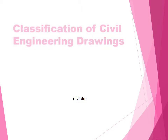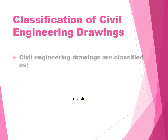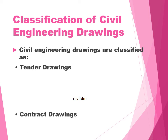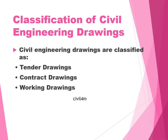Classification of Civil Engineering drawings: Civil Engineering drawings are classified as tender drawings, contract drawings, working drawings, and completion drawings.